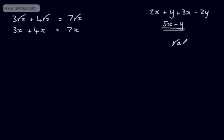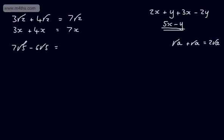In general, if we have root A plus root A, we end up with 2 root A. Let's look at another one. If we had 7 root 5 minus 6 root 5 — it's 7 lots of a quantity minus 6 lots of a quantity — that would just leave us one lot of that quantity. In the same way, if I had 7y minus 6y, we would end up with y. So that's adding and subtracting like surds.